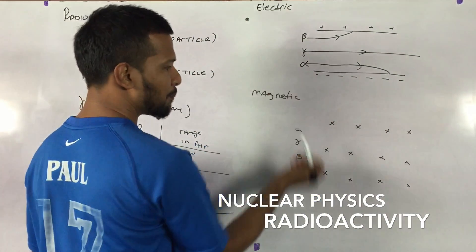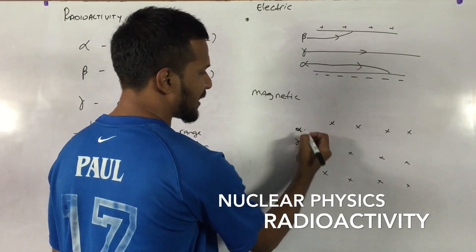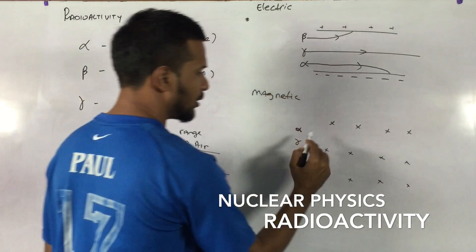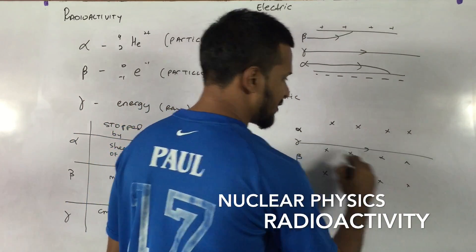Magnetic field now. So electric, magnetic field. What will happen in a magnetic field? Let's start with gamma. Gamma, neutral, goes straight through again. Very good if you guessed that.